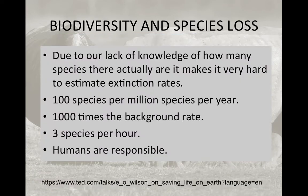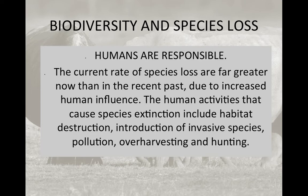Our lack of knowledge makes it very hard to estimate extinction rates — if we never knew a species existed, how do we know it's gone? But of the species we do know exist, we're losing about 100 species per million species every single year, and we think it's much higher — about 1,000 times the background rate, equating to roughly three species per hour. Humans are responsible. A very small percentage of species face extinction due to natural competition or resource limitation, but the current rate is so much greater because of human activities like habitat destruction, invasive species introduction, pollution, over-harvesting, and hunting.